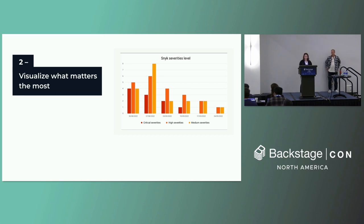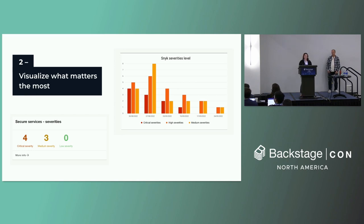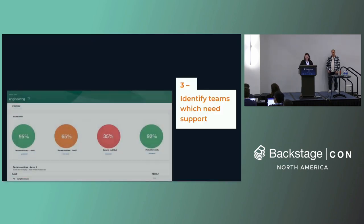Second, we wanted to visualize what matters most. We developed a graph card that shows fact value over a time range — for example, a one-month period. We also developed a big number card that gives you the current value for a fact. The biggest power of both cards is that you can combine multiple facts from multiple fact retrievers and display them all together.